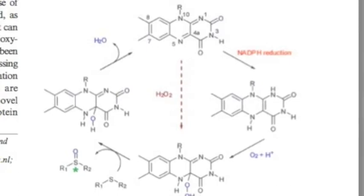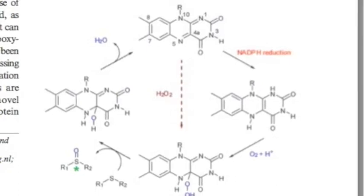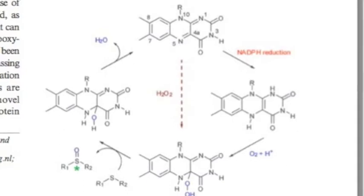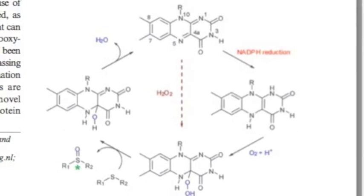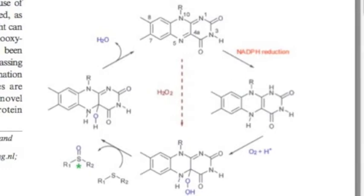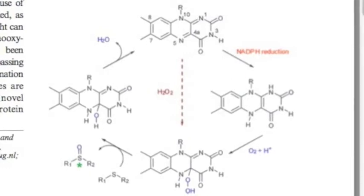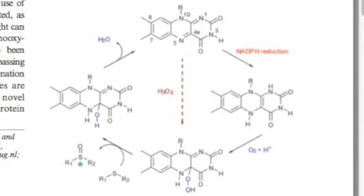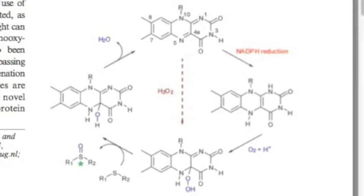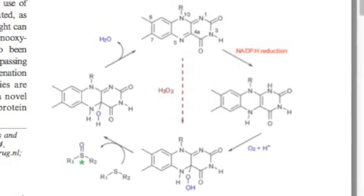To do so, the flavin cofactor needed to be redesigned. In this diagram, the solid arrows represent the mechanism operating naturally within flavoprotein monooxygenases.